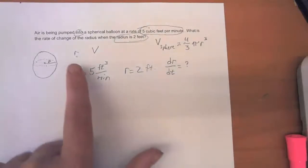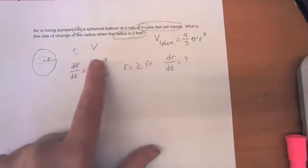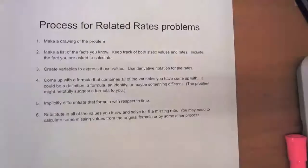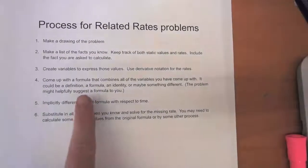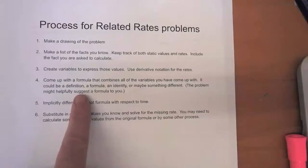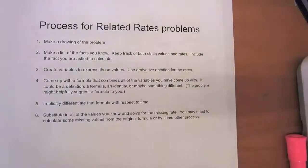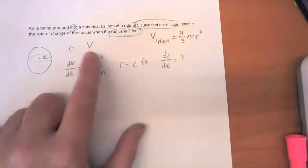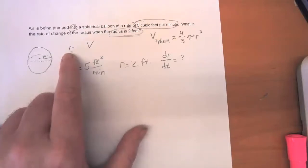The values we have aside from time are the radius and the volume. The next step is coming up with a formula that combines all of those variables. So what is an equation that combines the volume of a sphere with the radius of a sphere?